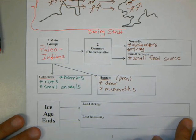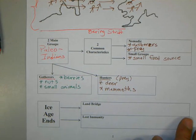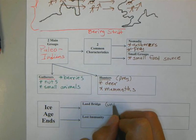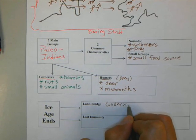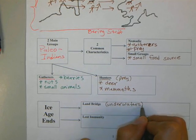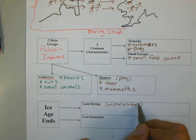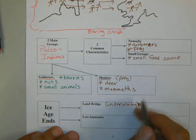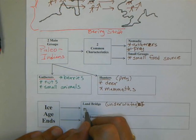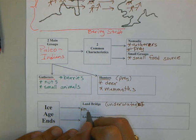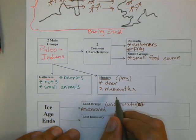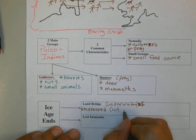As we move on, we're going to find out that the Ice Age ends and the land bridge is going to be under water. As the glaciers melt, the water table rises, and the land bridge is going to be under water. The Indians are going to be marooned and cut off from the rest of the world.